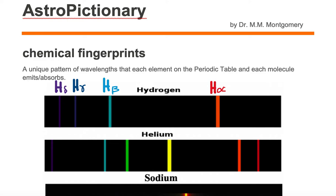So we're looking at a set of wavelengths and every element on the periodic table or each molecule has its own unique pattern of these wavelengths. Notice I said emits slash absorbs.